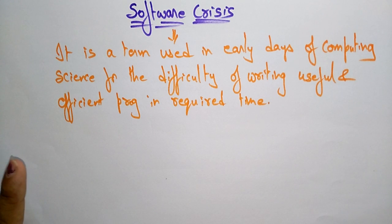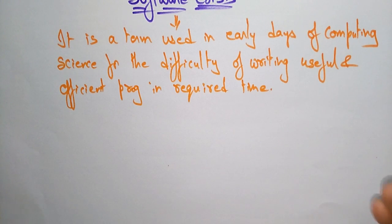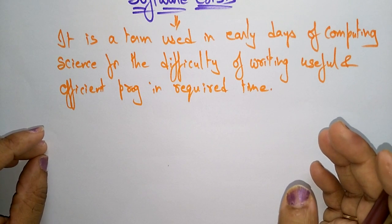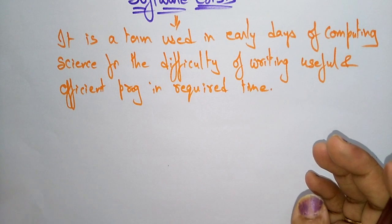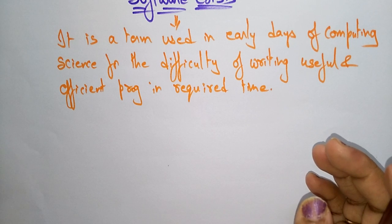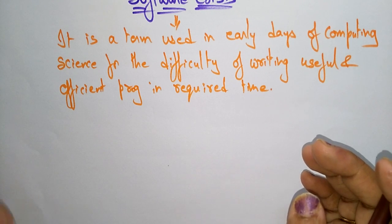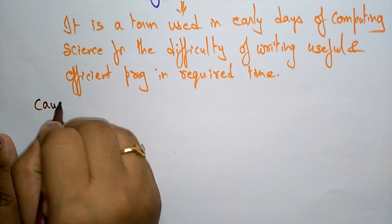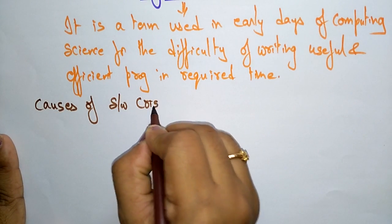We were not able to write useful and efficient code in the required time due to a rapid increase in computer power and also the complexity of problems that could not be tackled. Now let us see the causes of software crisis — what are the causes?